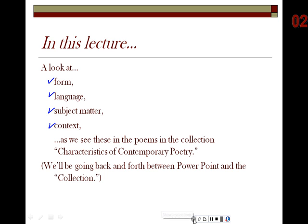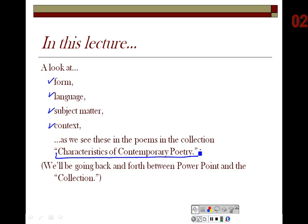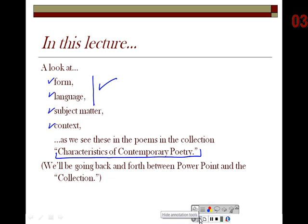We're looking at these four aspects of poetry as we see them in the poems in the collection, which I hope you are reading — a collection called Characteristics of Contemporary Poetry. It gives two poems representative of each of these categories for a total of eight poems. As we did in part one, we'll be going back and forth between the PowerPoint presentation and the collection itself.